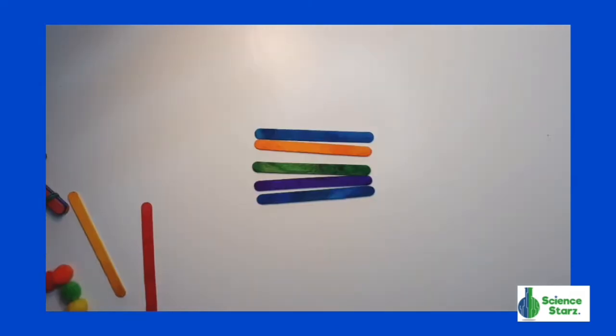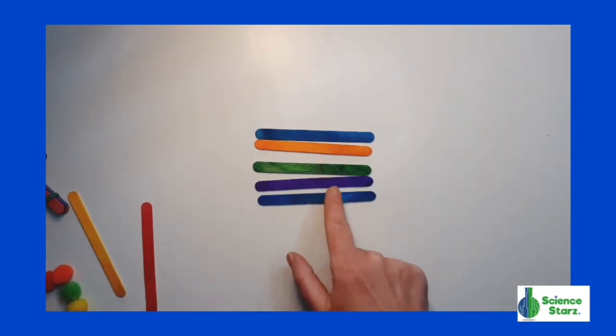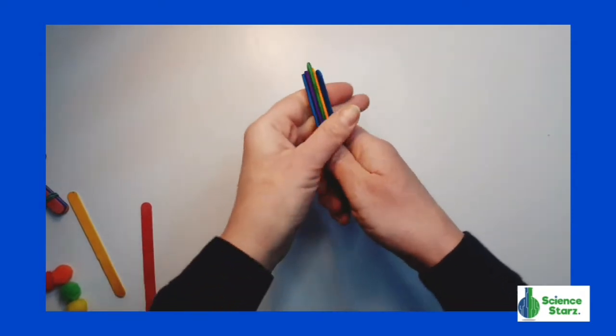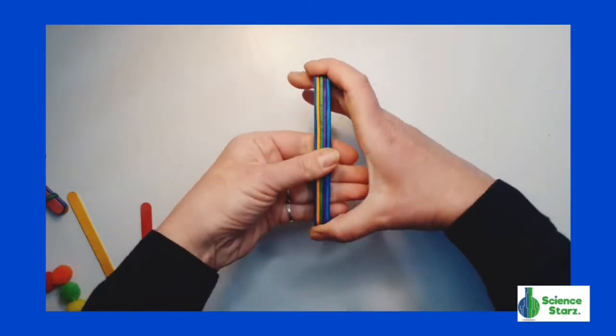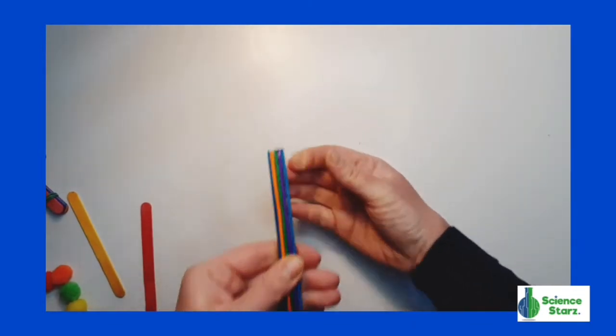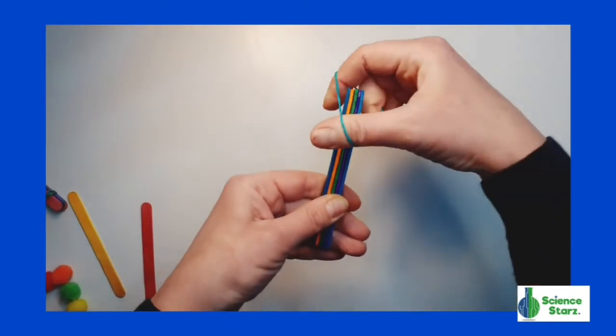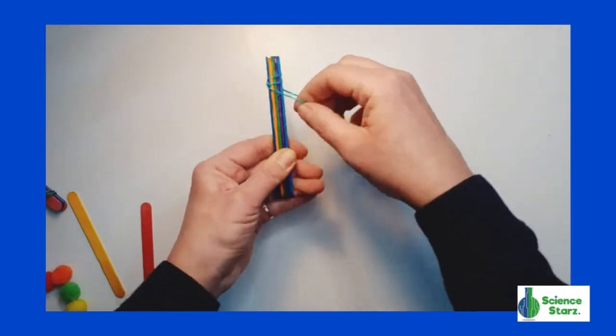The first step is to take five of your craft sticks and stack them all, one on top of the other, like so. And what we're going to do is we are going to secure these sticks together by wrapping the rubber bands around both ends of the stack. Wrap it around as tightly as you can